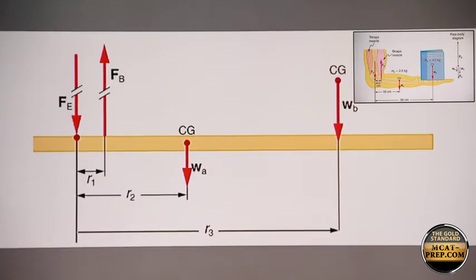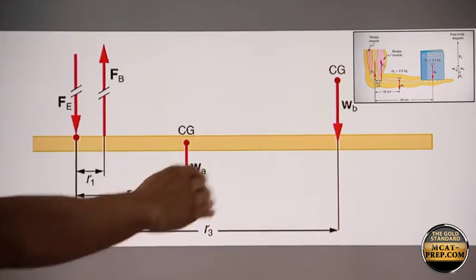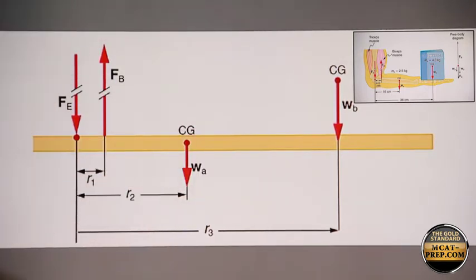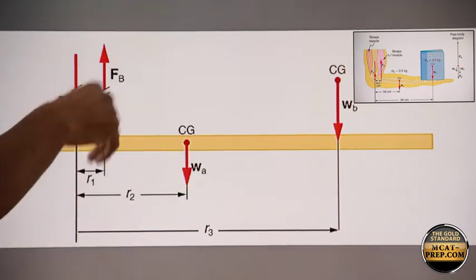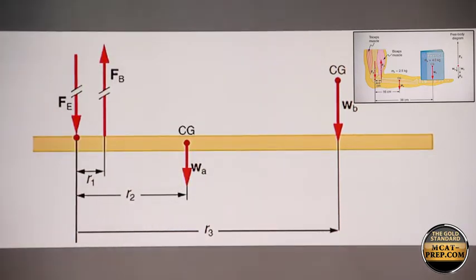I would just like to mention one thing. Part of the calculation is translational equilibrium, where you have all the downward forces equal to all the upward forces. So Fe plus Wa plus Wb would equal Fb.